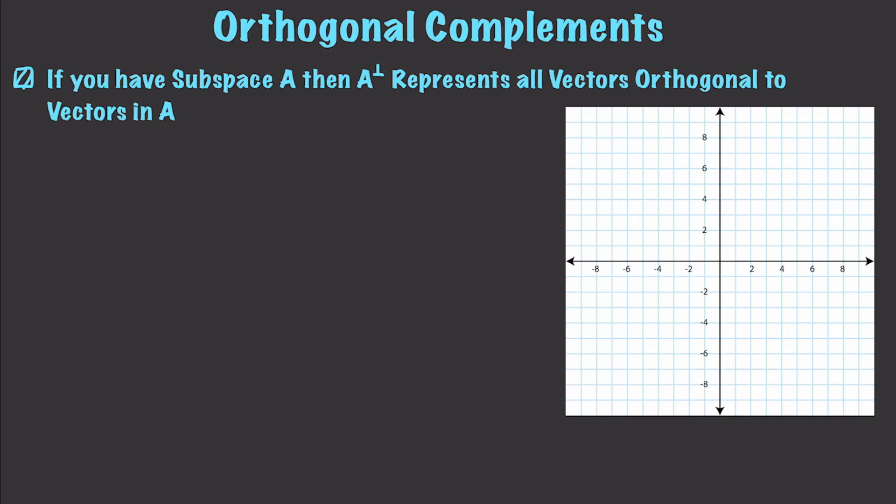So, what do we mean by orthogonal? Well, orthogonal refers to a relationship that is at right angles. So, if we have a subspace A, then A perpendicular, that's this guy right there, upside-down T, is going to represent all vectors orthogonal to vectors in A.